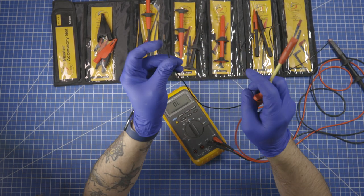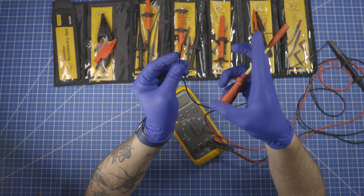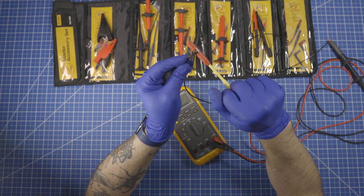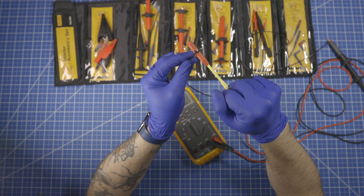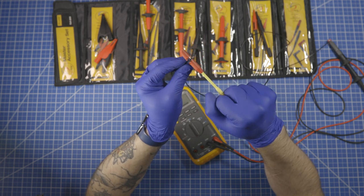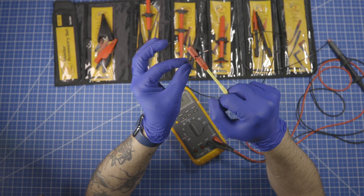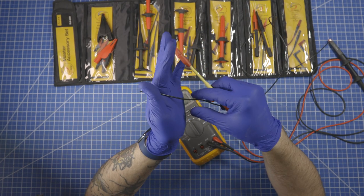And the way this works is it actually pierces the sheathing, the insulation, of the wire that you're testing. Place it in there and it just presses the needle right through. And that needle is very, very fine. You would need to take care to not yank on the wire to bend it over because then obviously it won't work very well.